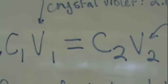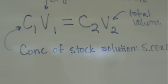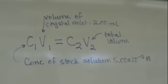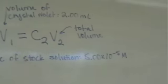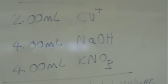For a dilution calculation, we use the formula C1V1 equals C2V2, where C1 is the concentration of stock solution, V1 is the volume of the solution, and V2 is the total volume.